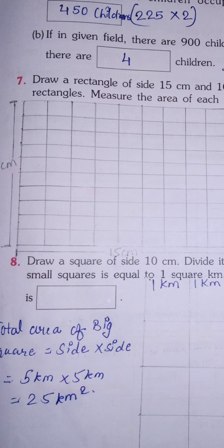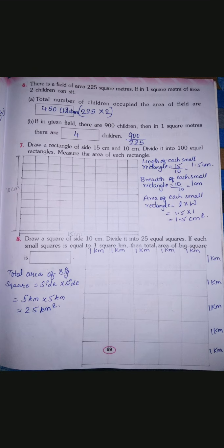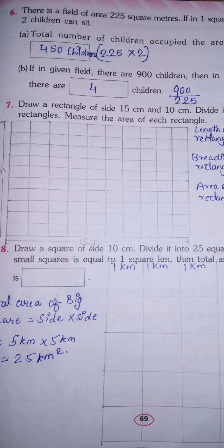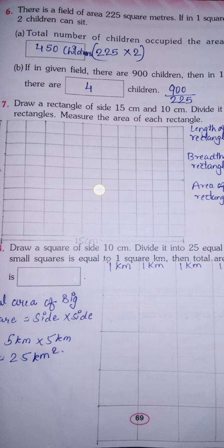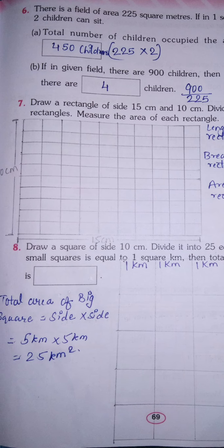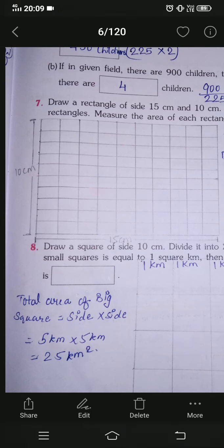After drawing this, they are asking us to measure the area of each rectangle. For finding the area of each small rectangle, you need to know its length and width. You know the length and width of the big rectangle — this is the length and this is the width. To find the area of small rectangles, you need to determine their individual length and width.